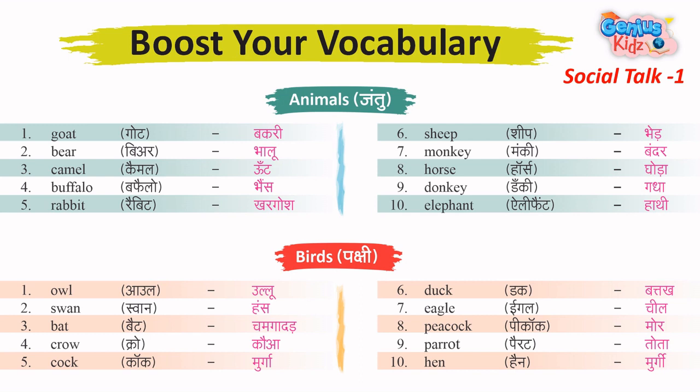4. Crow – Kauwa. 5. Cock – Murga. 6. Duck – Battak. 7. Eagle. 8. Peacock – More.